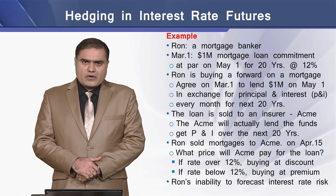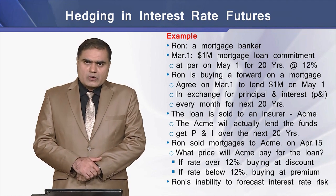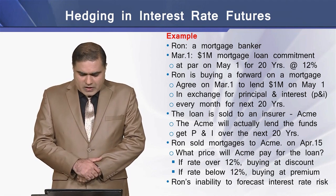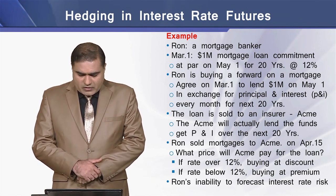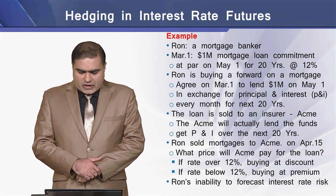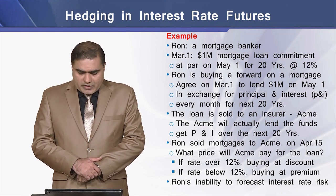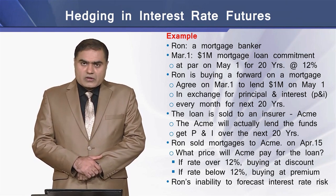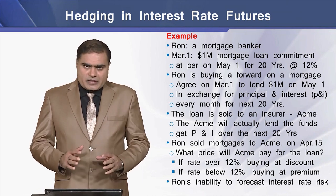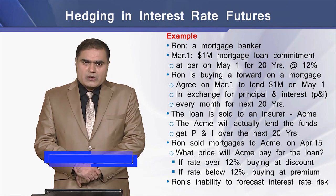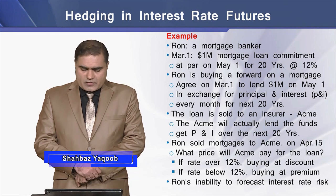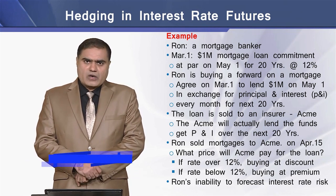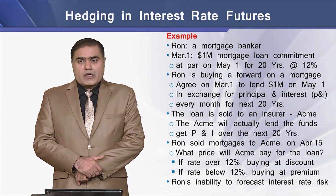We have an example of a mortgage banker known as Ron. On March 1, Ron has a mortgage loan commitment of $1 million at par on May 1, for a term of 20 years at 12% annual rate of interest. Ron is essentially buying a forward on a mortgage, meaning he is agreeing on March 1 to lend $1 million on May 1 in exchange for receipt of principal and interest payments every month for a total period of 20 years.